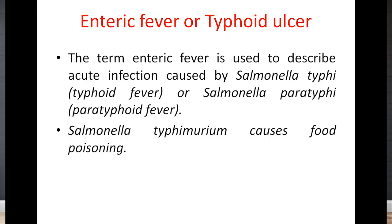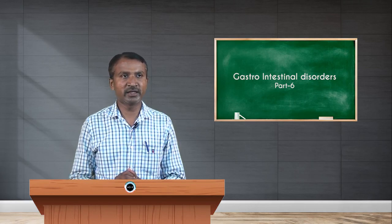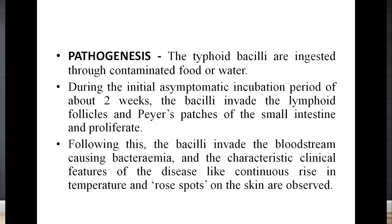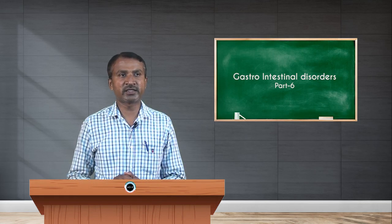Salmonella typhimurium causes food poisoning. In pathogenesis, the typhoid bacilli are ingested through contaminated food or water. During the initial asymptomatic incubation period of about two weeks, the bacilli invade the lymphoid follicles and Peyer's patches of the small intestine and proliferate there. Following this, the bacilli invade the bloodstream causing bacteremia and characteristic clinical features such as continuous rise in temperature and rose spots on the skin.